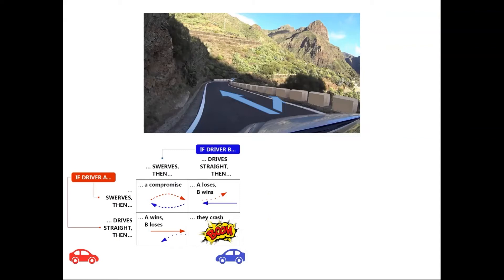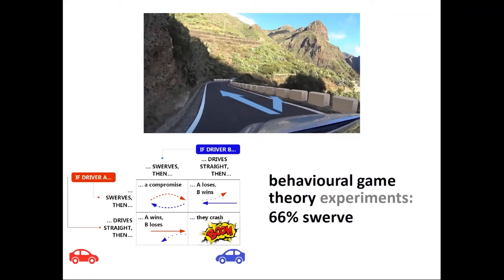Behavioral game studies study people's willingness to cooperate with others in such abstract scenarios. In the game of chicken, what we know is that most of the time the majority of people swerve — the majority of people cooperate — and they do it when they expect others to cooperate as well.